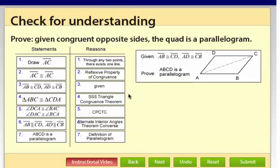So this proof says, given congruent opposite sides, the quadrilateral is a parallelogram. So now they're logical statements that show the property of parallelograms is true. So now you know you can use this statement to prove that quadrilaterals are parallelograms.